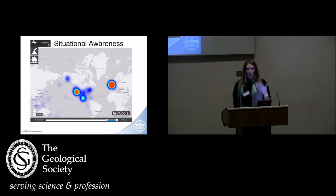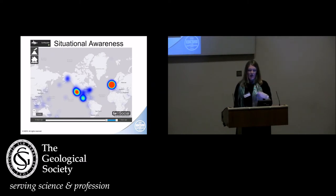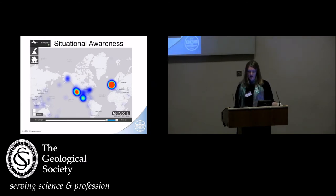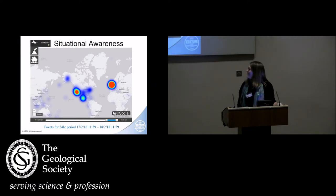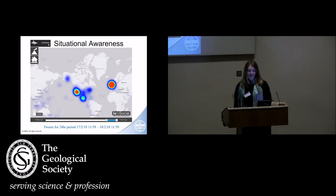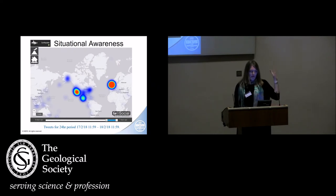Going back to the situational awareness — we want to know what's happening on the ground, we're remote from it. Anyone hazard a guess as to the date that this image was taken? It's showing you tweets about earthquakes. The 17th of February — we had an earthquake in the UK, so it's a big red dot over the UK. There's also some stuff going on in Mexico and California as well.